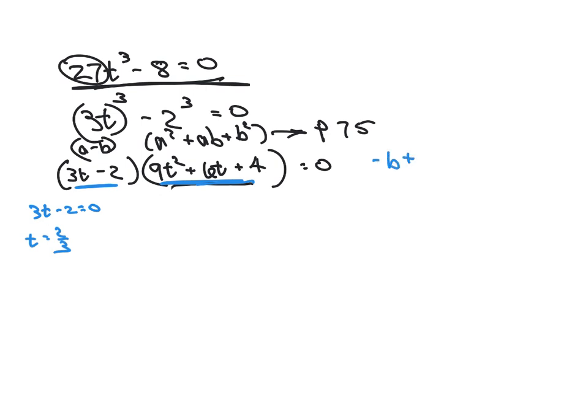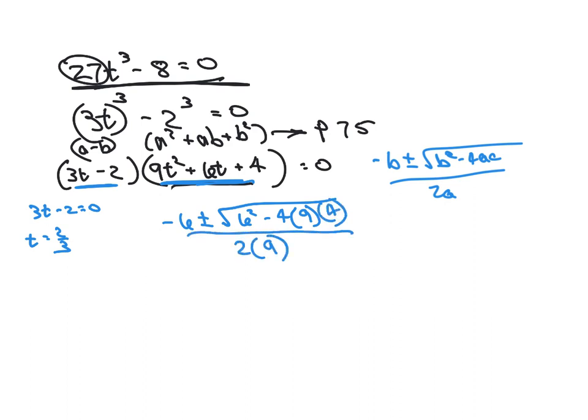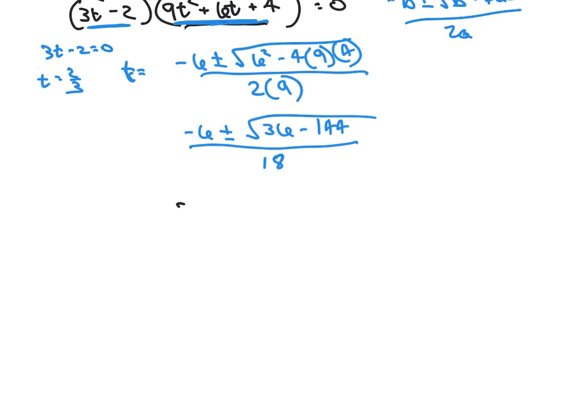When I do negative b plus or minus the square root of 6 squared minus 4 times 9 times 4, all over 2 times 9. Now let's go ahead and solve this. So that's my other t. So negative 6 plus or minus 36 minus 144. That's gonna give me a negative number under there. So that already tells me I'm gonna have an imaginary number for my other two answers. So that's what that does. It tells me what kind of an answer I'm gonna get.